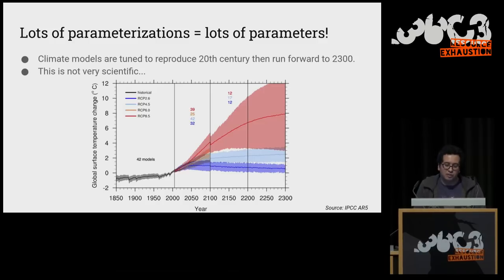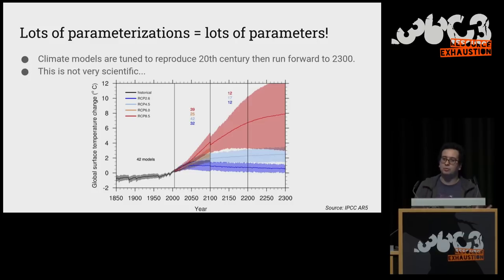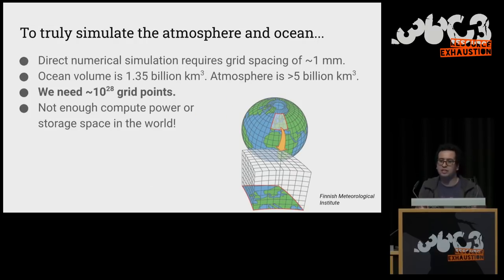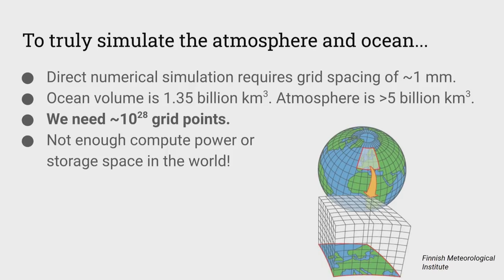Some people might say this tuning process is not very scientific, and they'd be kind of right. It's kind of the best we've had. If you want to do a direct numerical simulation — resolving all motions in the ocean and atmosphere down to one millimeter grid spacing — you need on the order of 10 to the 28 grid points. Unfortunately, there's not enough computer power or storage space in the world to do that. Most climate models use about 10 to the 8 grid points, which is 10 to the 20 too few.